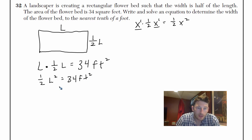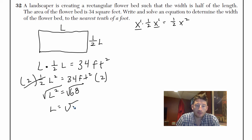And I'll ignore the units for a second, but I want to get rid of that half so I multiply by the reciprocal. That crosses out and I get L squared equals 68. So how do I do this? How do I get rid of that squared? Take the square root. L equals radical 68.